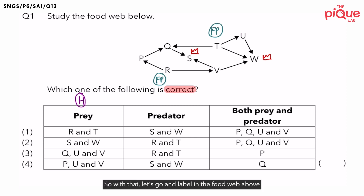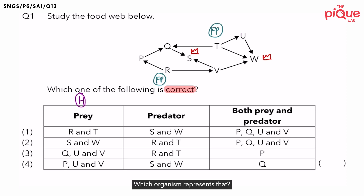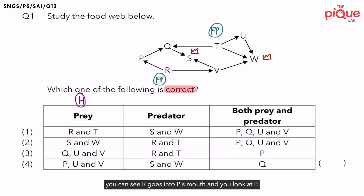Let's go and label in the food web which organisms are the herbivores. Remember, herbivores feed only on plants, which means there should be arrows pointing from a plant into the herbivore. Looking at the diagram, R goes into P's mouth. Does P feed on any other organisms? No. So we know P is a herbivore.